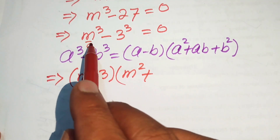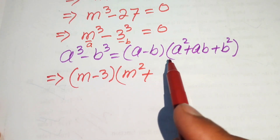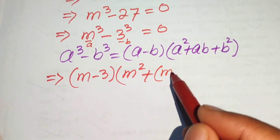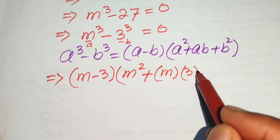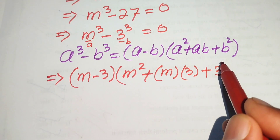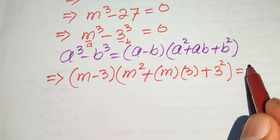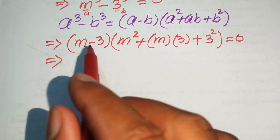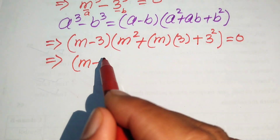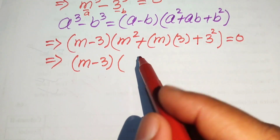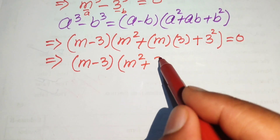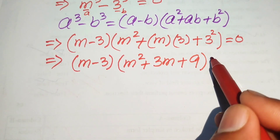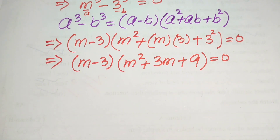Here our a is m and b is 3. So we write a squared as m squared, and ab as m times 3, plus b squared which is 3 squared. After simplification this is written as m minus 3, times m squared plus 3m plus 9, where 3 squared equals 9, and the whole equation equals 0.